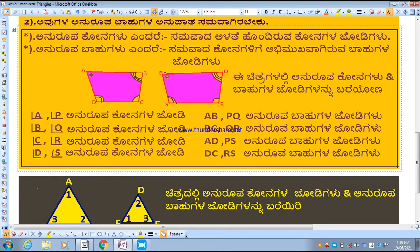DC and RS are congruent. What is B? BC. What is B? QR. BC and QR are congruent. Next. What is B? AD. What is B? PS. AD and PS are congruent. They are congruent.